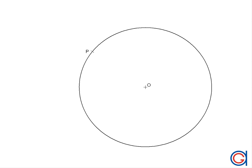Hello, today we are going to learn how to draw a tangent line to a given circle with a tangent point P on the circle as shown here.